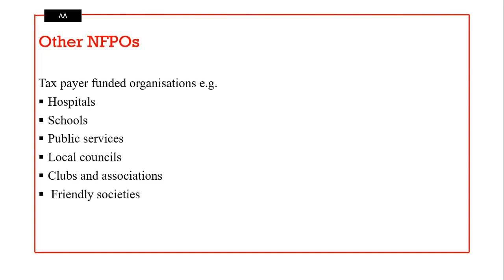What are some of the other not-for-profit making organizations that you may know? We have the government and taxpayer-funded organizations including government hospitals, schools, public service institutions, local councils, clubs, and associations. Some of these clubs may be partly funded by the government, and we also have what we call friendly societies.